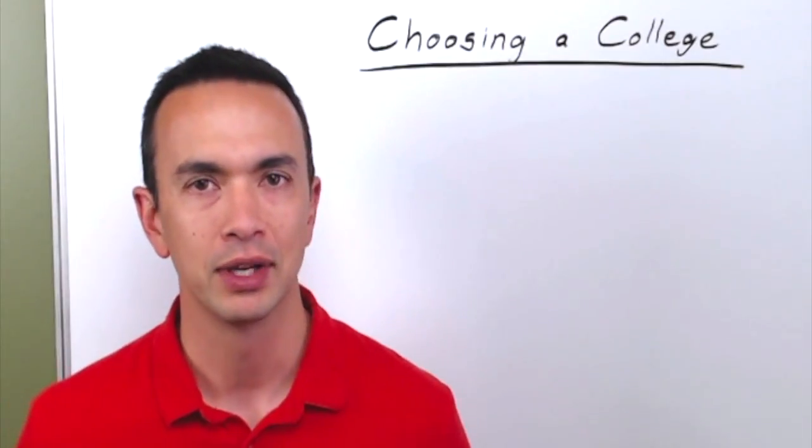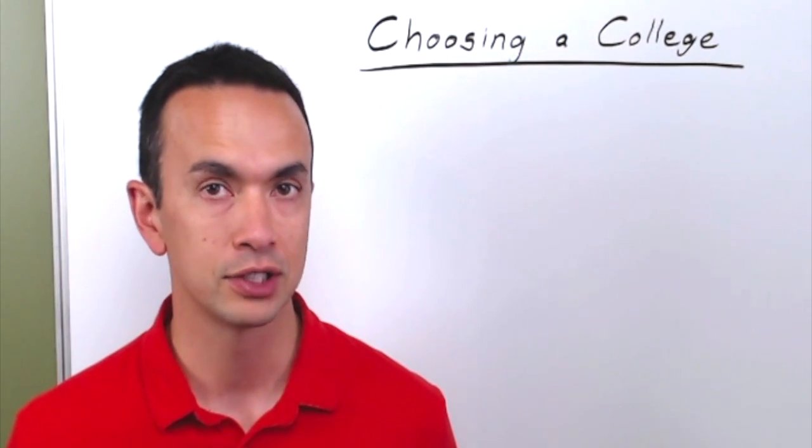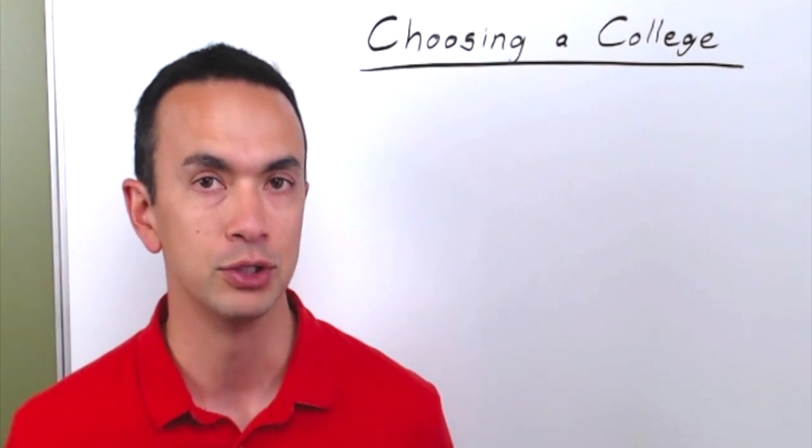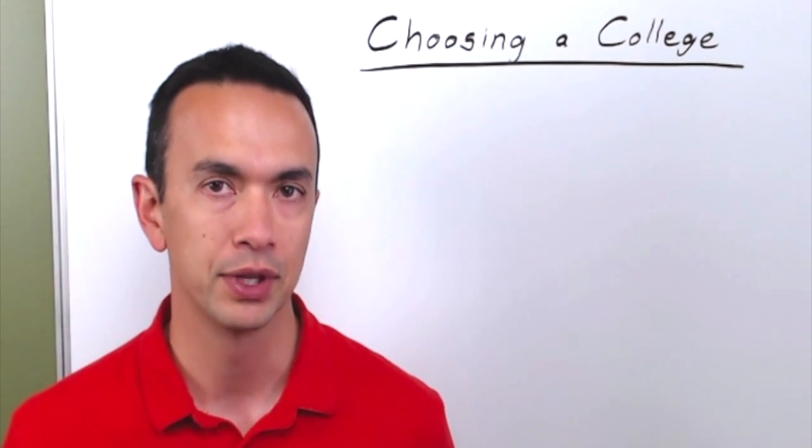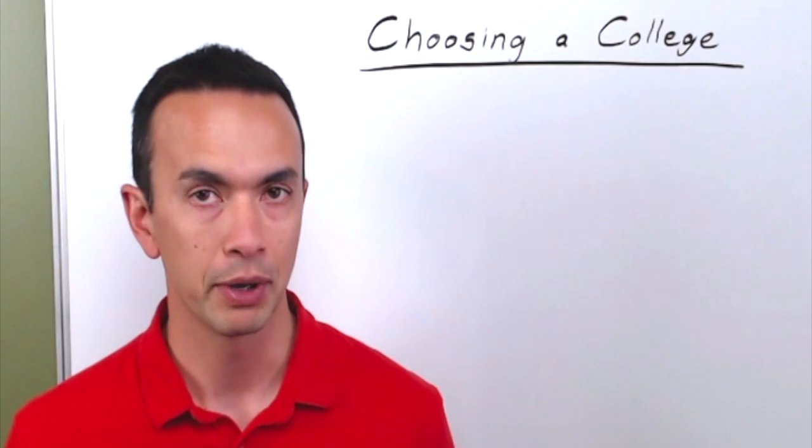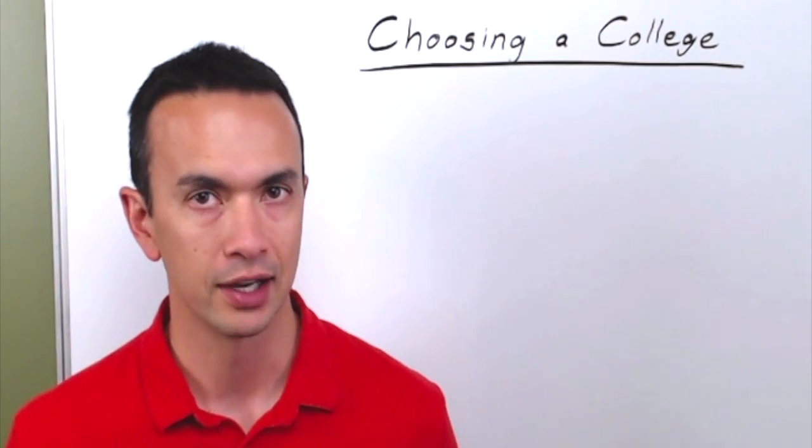We've talked about 529 plans and how they're a good way of saving for education. When your kid gets to be in their junior year or so, you need to really start thinking about choosing a college. I feel like that's something we don't talk about enough, don't stress enough. So here's how it goes a lot of times.